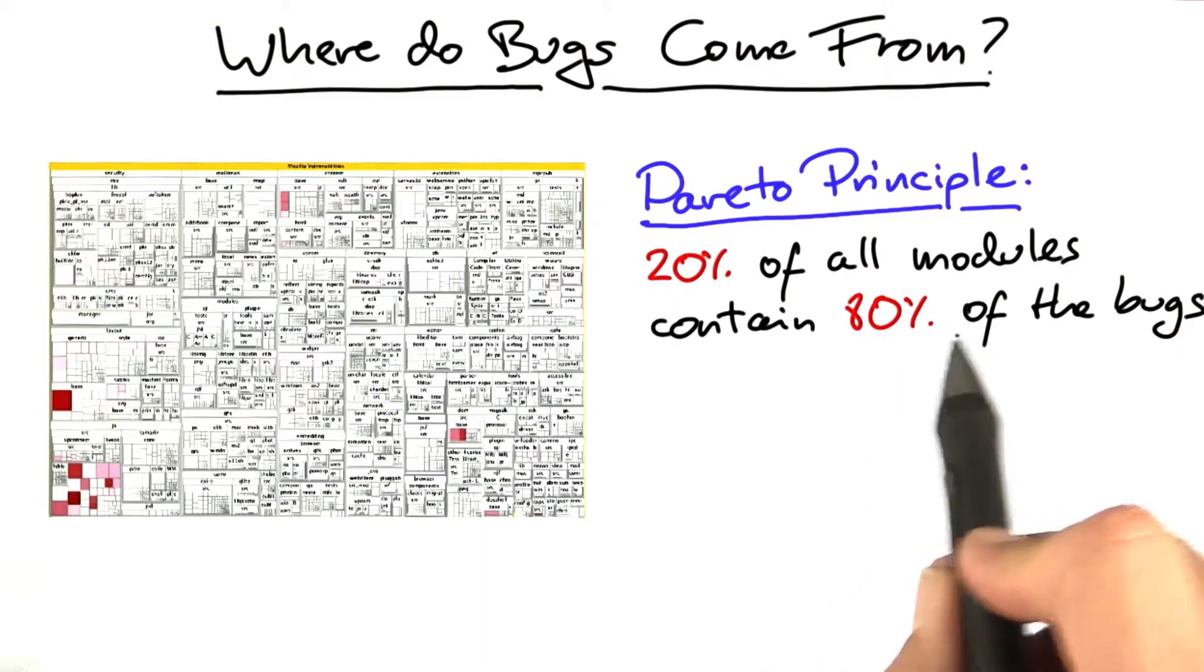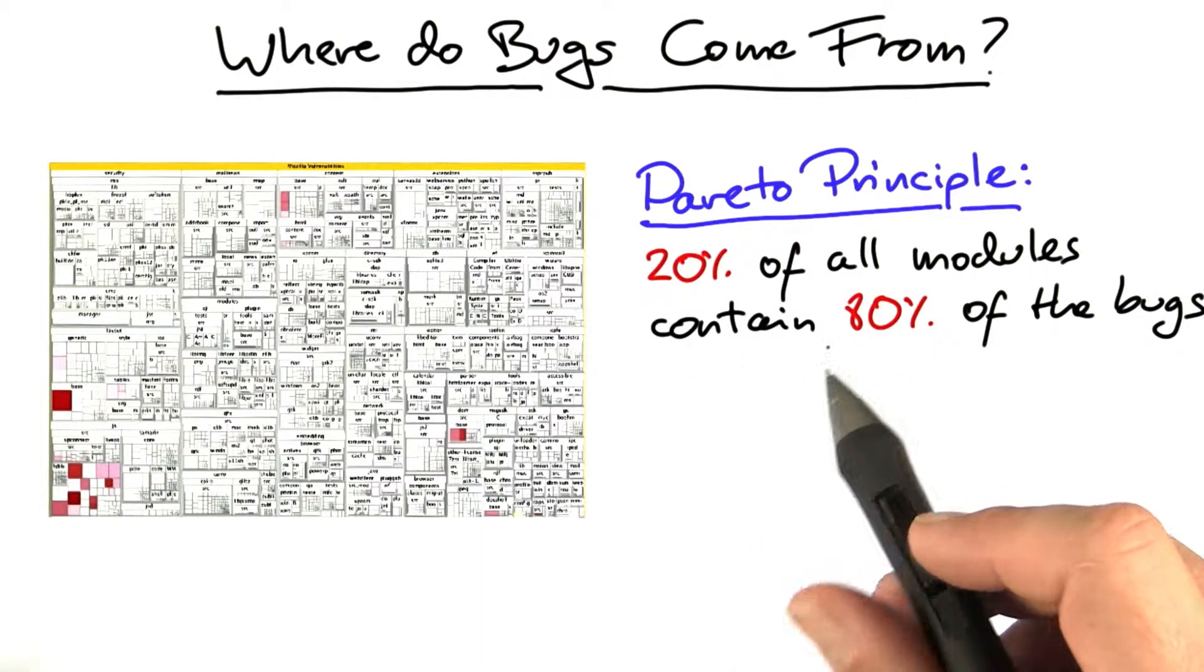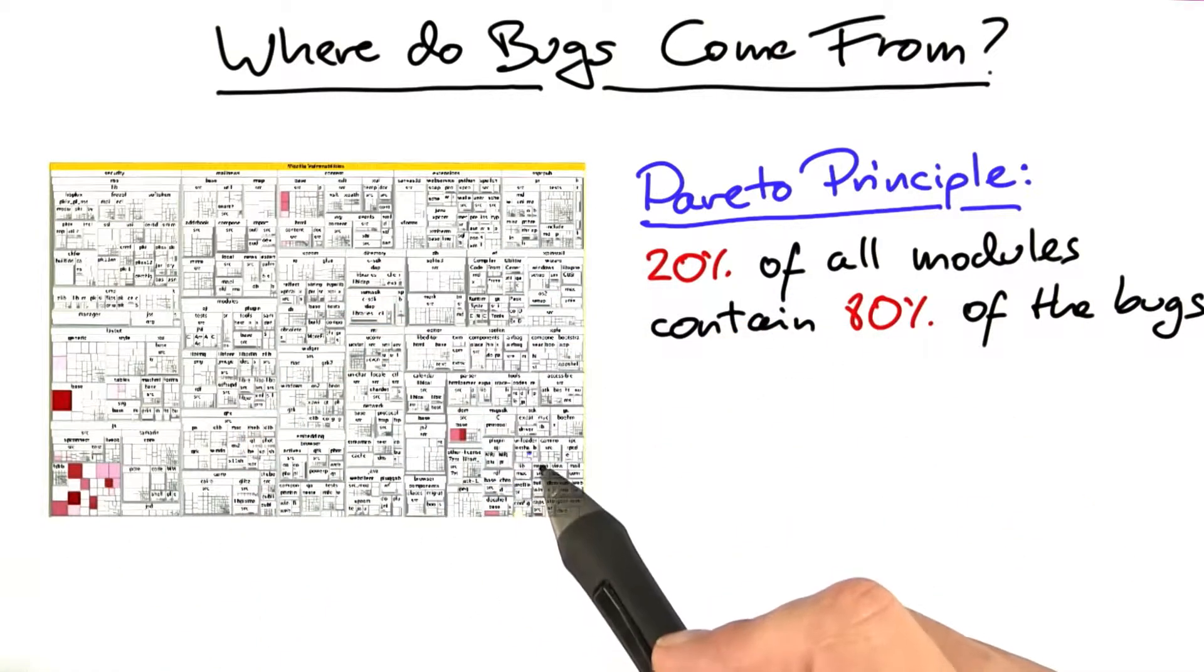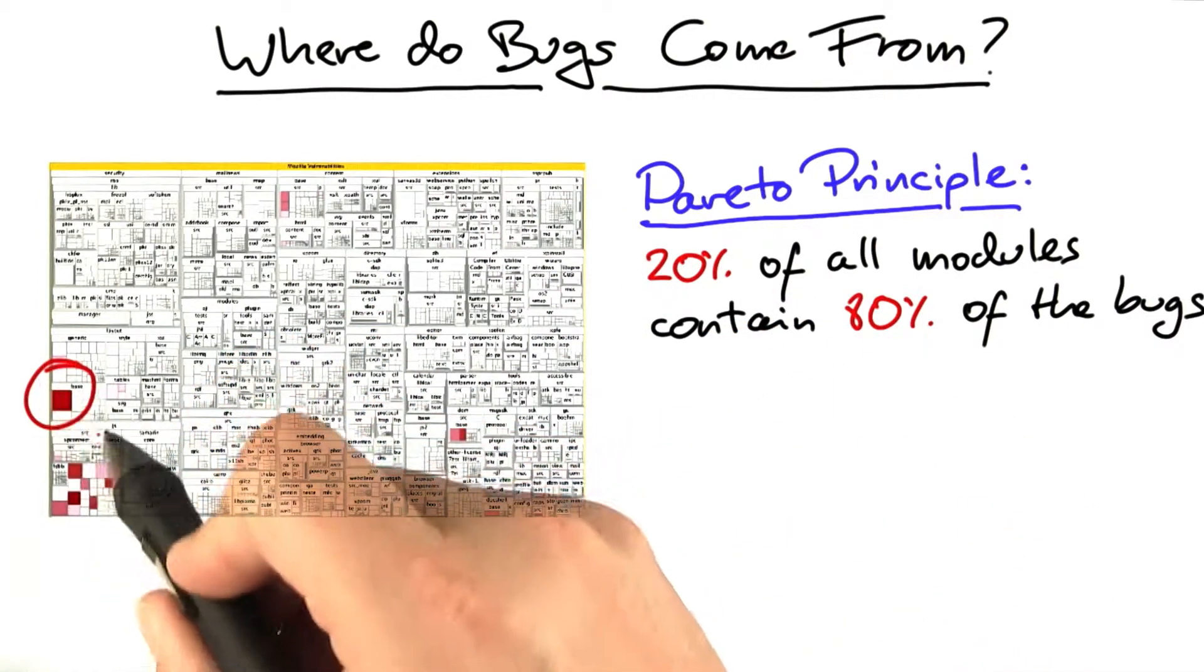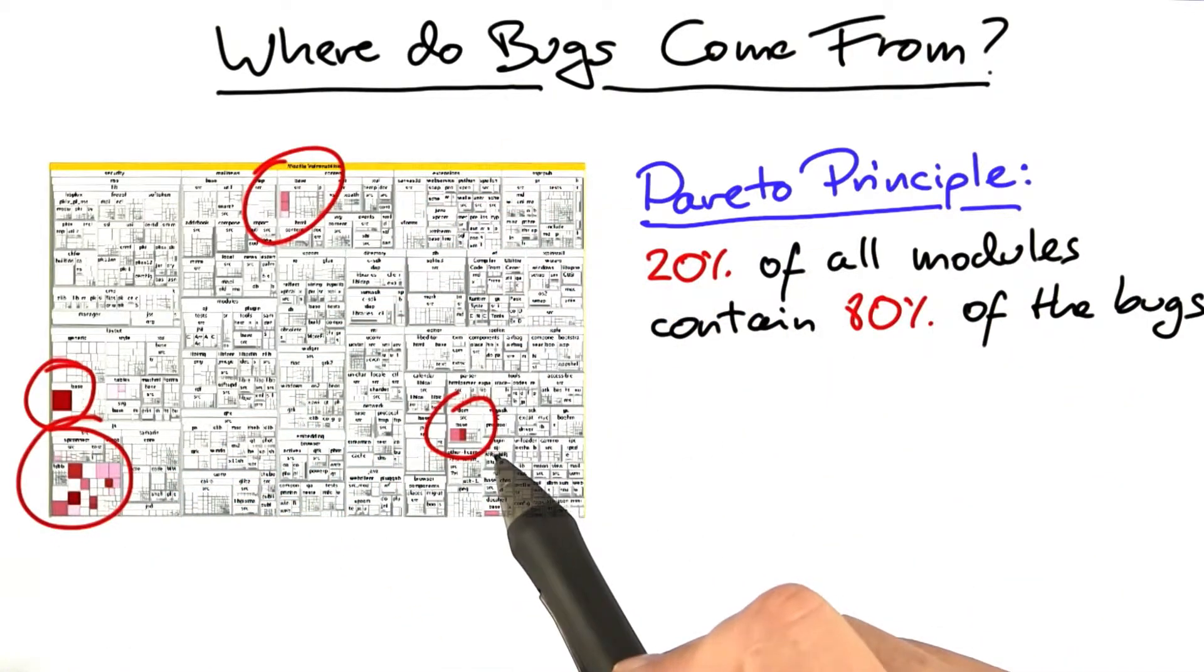The numbers vary from project to project, but what we always found was there was a relatively small number of modules that would contain lots and lots of issues.